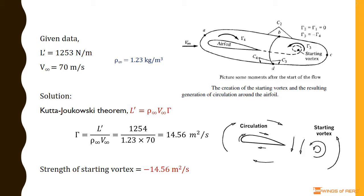Now, we have to find out the strength of the steady-state starting vortex. As we know, the Kutta-Joukowski theorem relates the lift generated by an airfoil with the speed of the airfoil through the fluid, the density of the fluid, and the circulation around the airfoil.